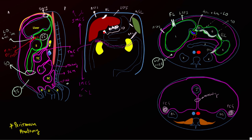The free edge of the lesser omentum is where the foramen of Winslow allows communication between the lesser sac and the greater sac. In the inframesocolic space, the small bowel mesentery — extending from the region of the superior mesenteric vasculature in the midline to the right lower quadrant — divides the space into right and left portions. The right inframesocolic space is nearly trapped by the mesentery and does not freely communicate with the pelvis, whereas the left side does communicate freely with the pelvis.